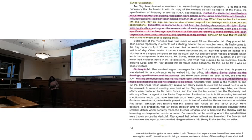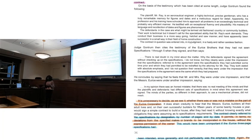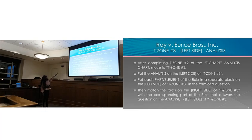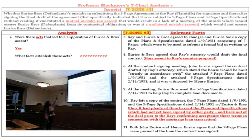You have to read it at least twice. Some people don't think they have the time, but this is a skill — as time goes on it gets quicker and you know what you're looking for. Now I'm going to go through my analysis. I have my relevant facts and facts that relate to the parts of the rule I need to resolve. Starting with number one: were there acts that led to a supposition of the defendant's assent? I'm going to pick out the things that would lead the plaintiff to believe they assented.